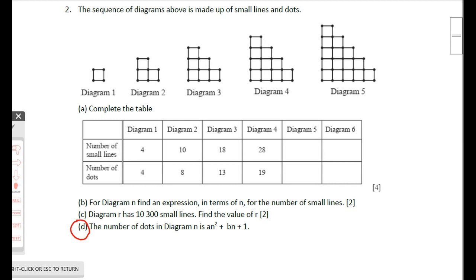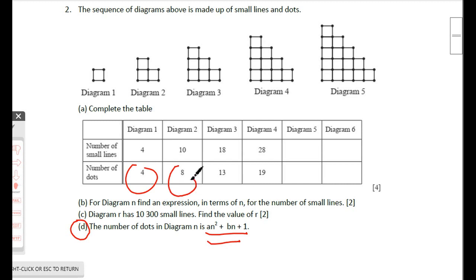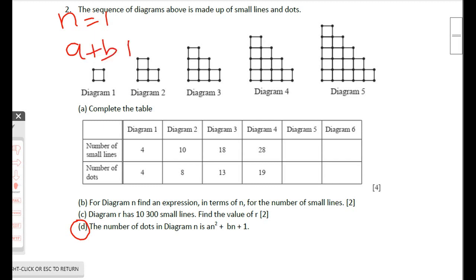The sequence of dots is 4, 8, 39... When n = 1, the expression gives a + b + 1 = 4. When n = 2, the expression gives 4a + 2b + 1 = 8. This gives us two simultaneous equations to solve.